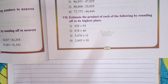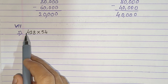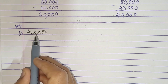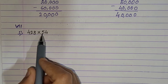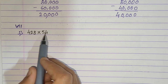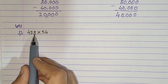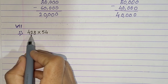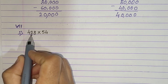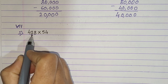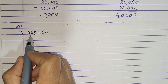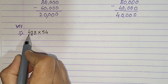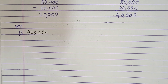So first we will take 428 into 54. I have written the same example here: 428 into 54. First we have to round off both numbers to their highest place. For 428, the highest place is 100. To round off to the 100 place, we have to look at the digit at the 10s place. If the number at the 10s place is 1, 2, 3, or 4, then you replace the 10s and units with 0 and keep the 100s digit unchanged.